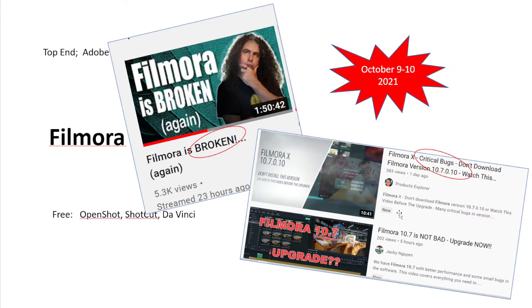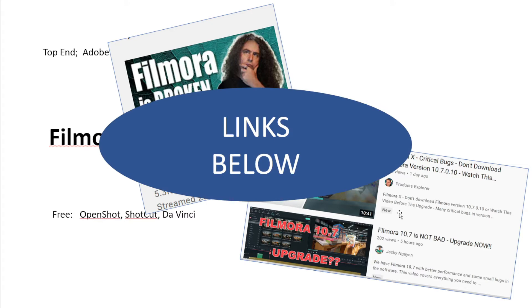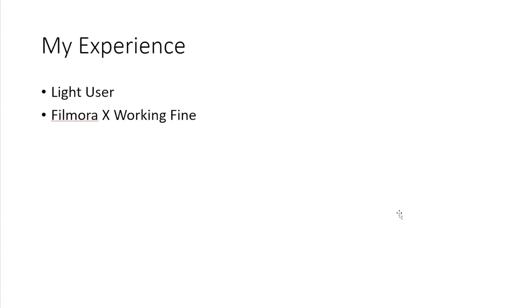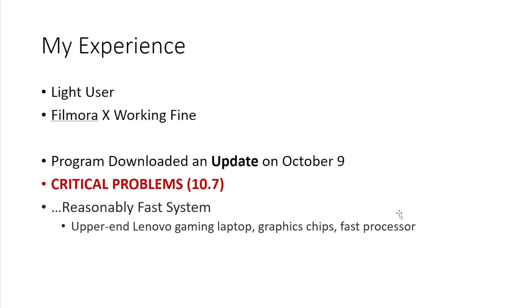So what happened on October 9th and 10th? Filmora released version 10.7. It downloaded on my computer and immediately, seriously broke Filmora. It would not work well at all. I even tried deleting it and going back to an earlier version, and that didn't seem to work, so I was pretty desperate. I was thrilled to find that there was a lot of information about this within 48 hours on YouTube and the internet. Filmora X was working fine on my computer, and then with the download on October 9th there were critical problems.